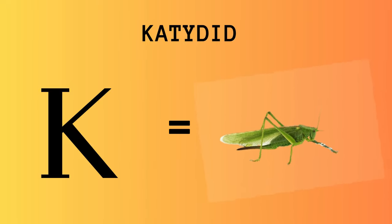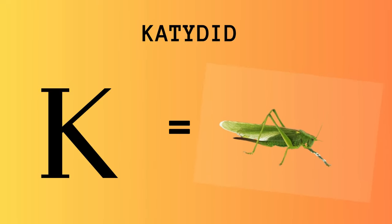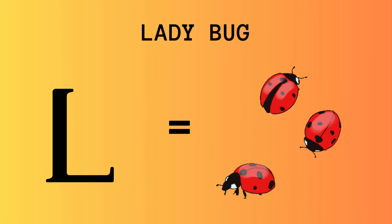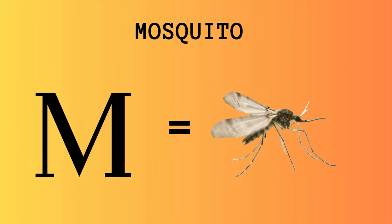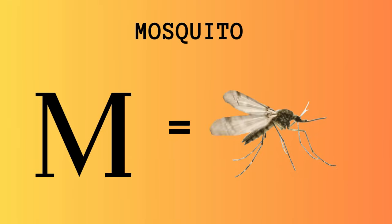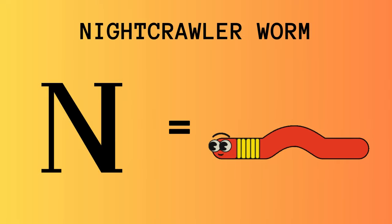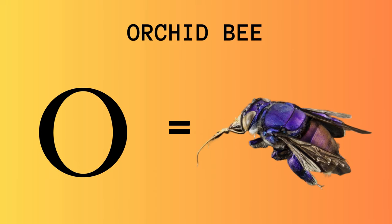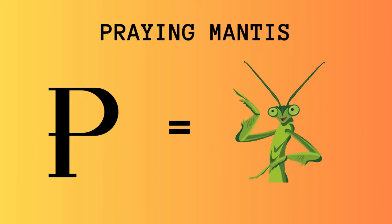K for Katydid. L for Ladybug. M for Mosquito. N for Night Rule. O for Orchid Bee. P for Praying Mantis.